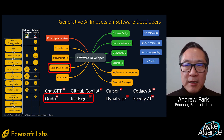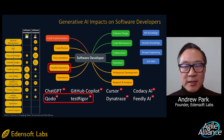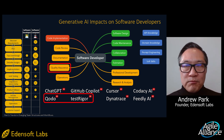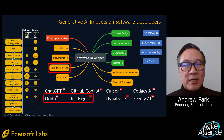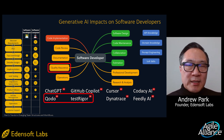For quality assurance, Quodo specializes in generating unit tests using AI by analyzing code structure and suggesting test cases that cover various execution paths. It helps automate basic test coverage, though the generated tests often require manual review to ensure they're complete. It's much better than GitHub Copilot or ChatGPT at generating unit tests.